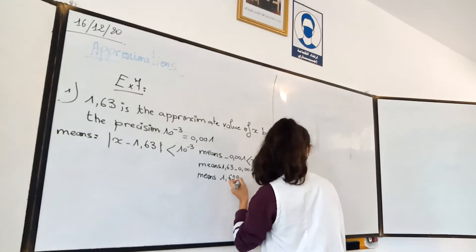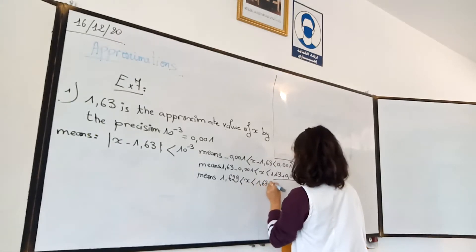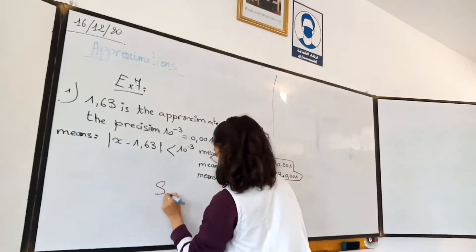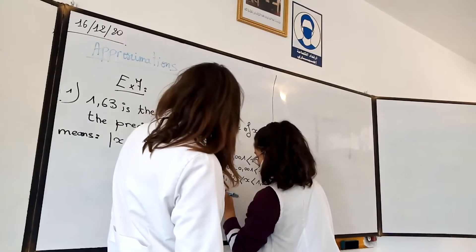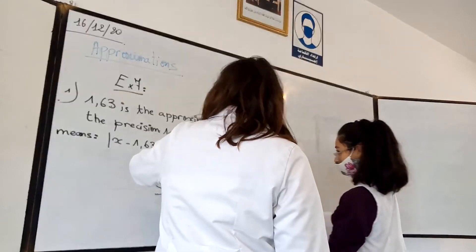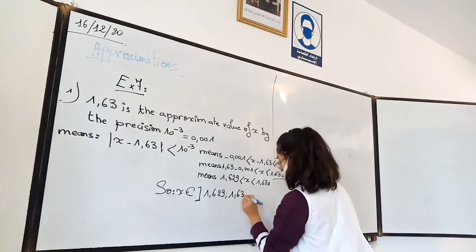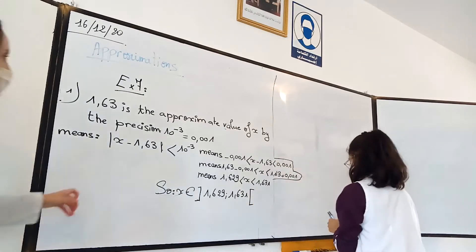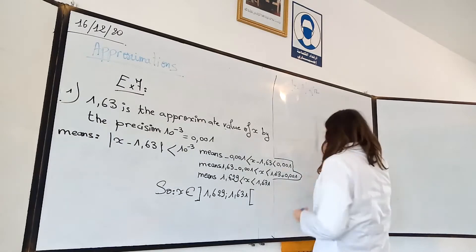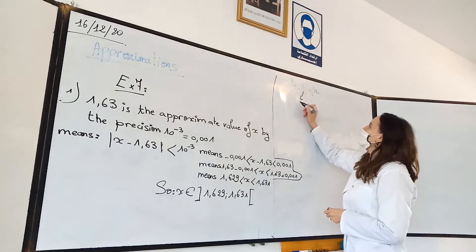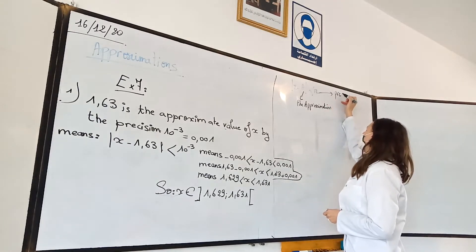We have the approximation rule. The rule is: x minus a less than r, where a is the approximation and r is the precision. So x minus a less than r gives us the interval for x.